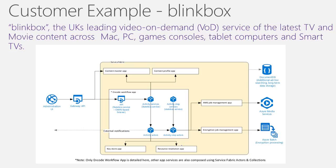A simple graph is implemented on top of .NET collections to do this. Each of those activity step actors then communicates with the other components — for example, the Azure Media Service job management application, which is another Service Fabric service that encapsulates all the required API calls to Azure Media Services and stores some state in actors. The encryption job management app is another Service Fabric service that contains all the logic and reference to the Azure Batch SDK assemblies, so they can protect the new James Bond movie using an encryption format. Once all the activity steps are completed, they notify the activity actor, which then sends a notification back to the original client.